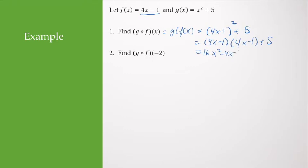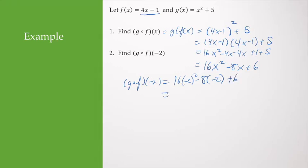16x squared minus 4x minus 4x plus 1 plus 5. I get that 16x squared minus 8x plus 6. And then in order to find g composed with f of negative 2, I'm going to go ahead and substitute that in. So I have 16 negative 2 squared minus 8 times negative 2 plus 6. So negative 2 squared is 4. 16 times 4 is 64 plus 16 plus 6. I have 64 plus 22, so my answer is 86.